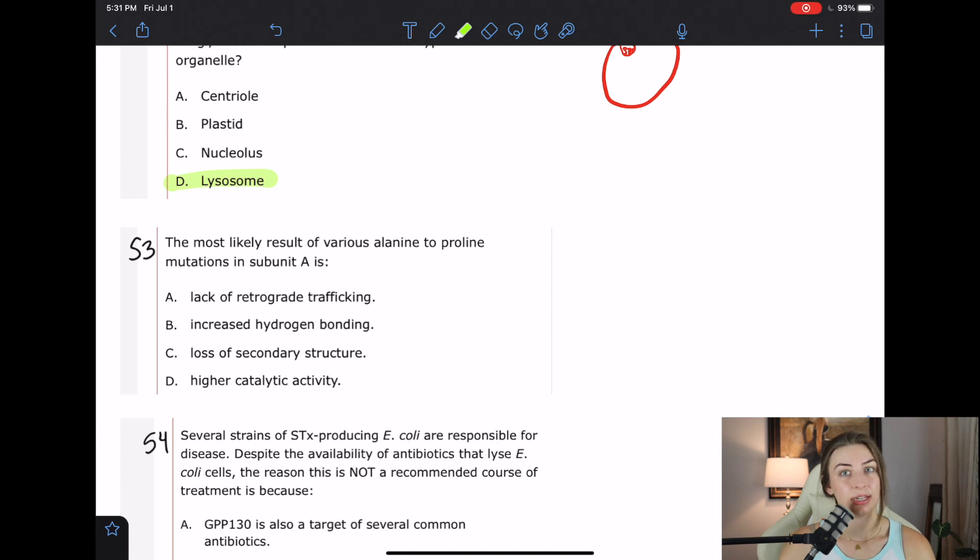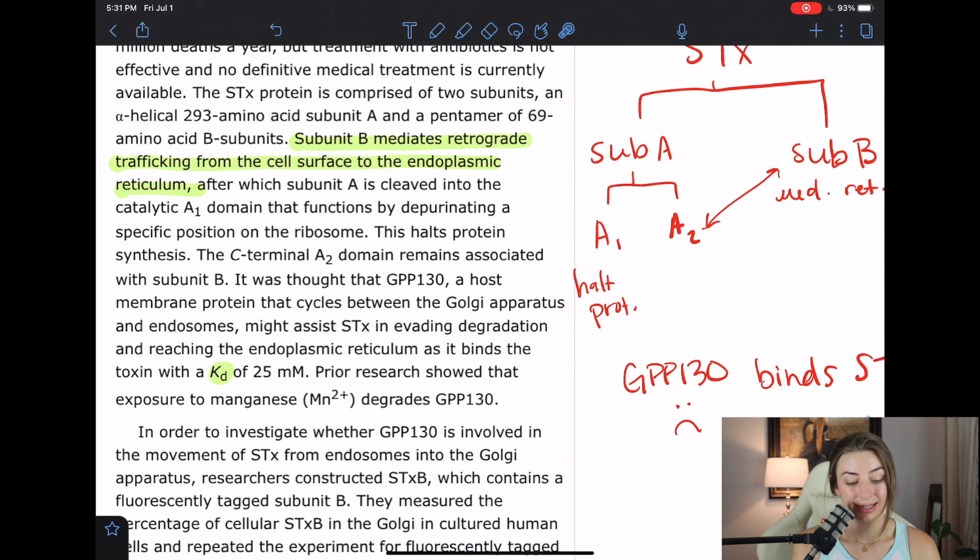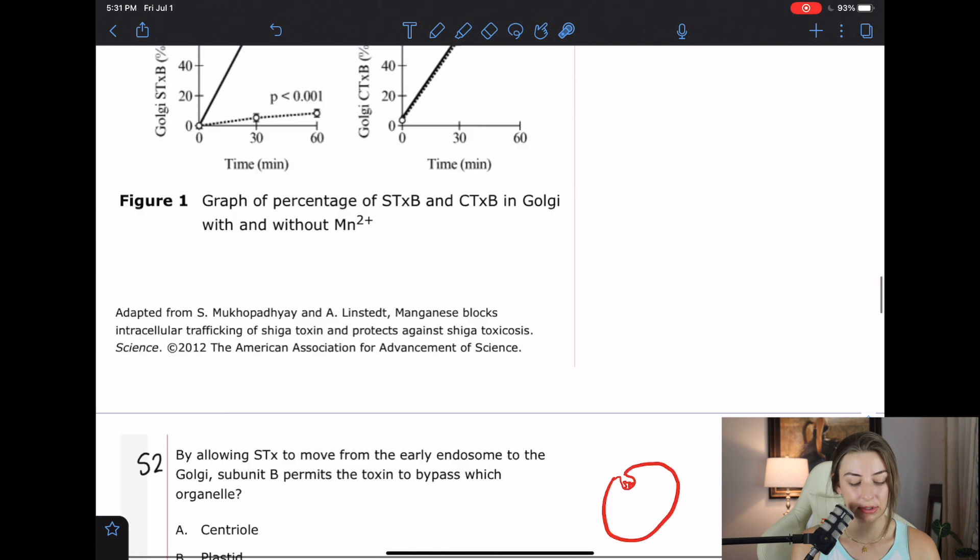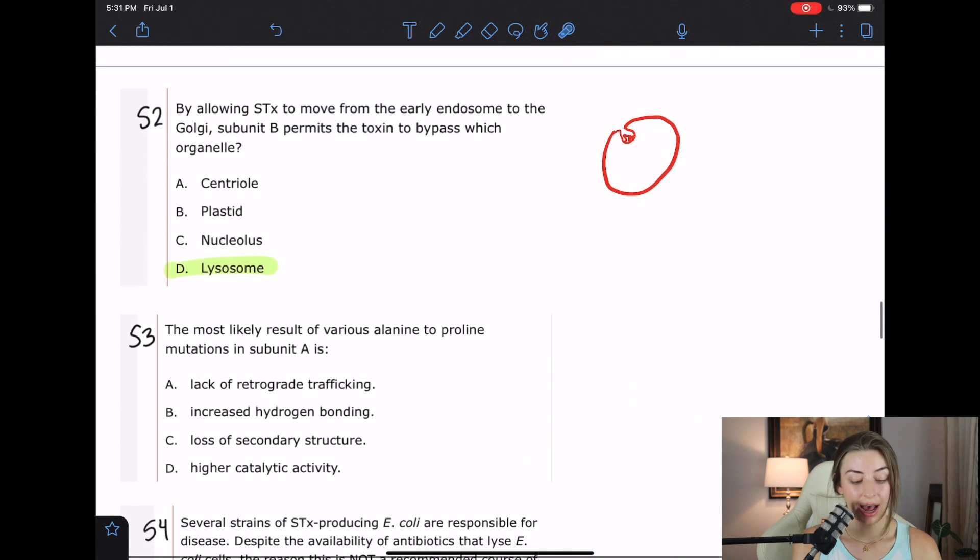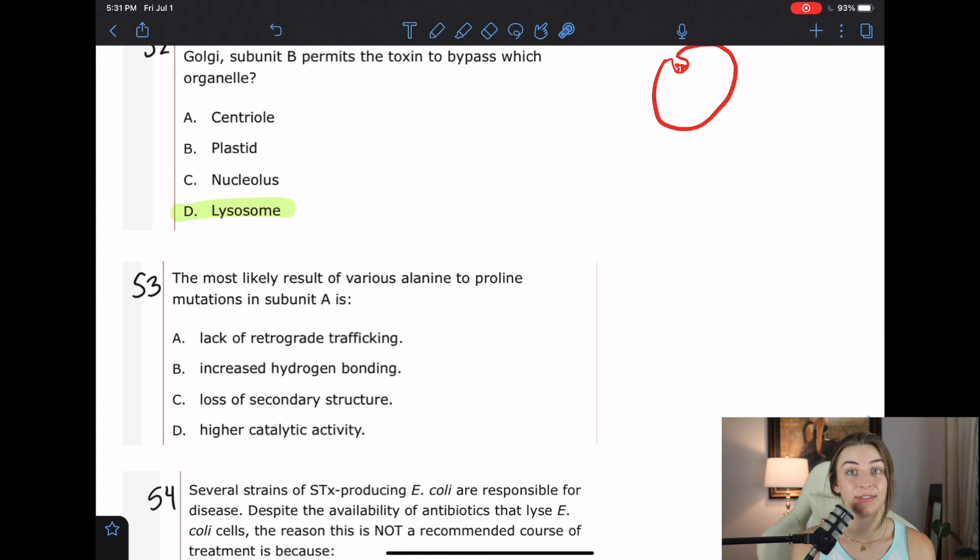D says higher catalytic activity. I don't think we have any specific evidence that tells me that it does. But I do know from my basic sciences that proline is going to muck up the secondary structure. So I'm going to pick that one.